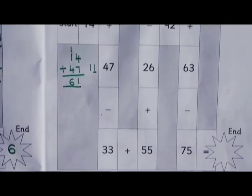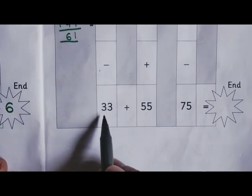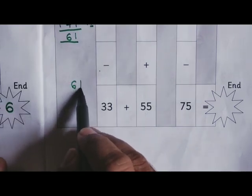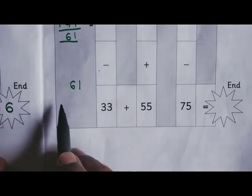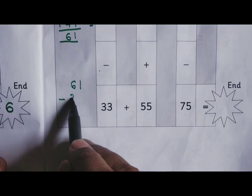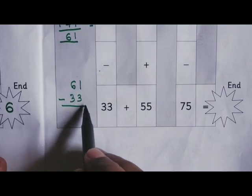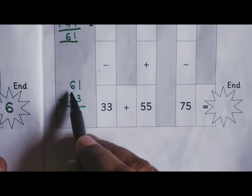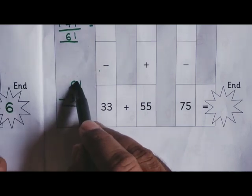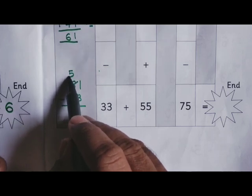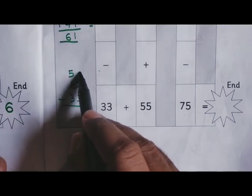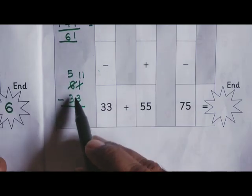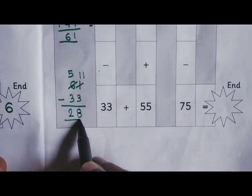Now next one. 61 minus 33. 61 write. Then minus 33. 1 minus 3 is not possible. So we will borrow from the tens place. Here 6 tens are there. We take to borrow 1 tens. So 5 tens will be here. And 10 plus 1 is 11 units. 11 minus 3 is 8. 5 minus 3 is 2. Answer is 28.